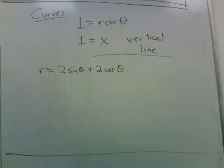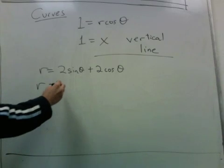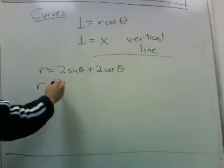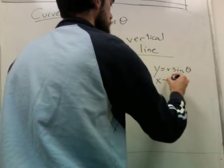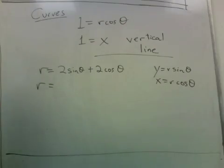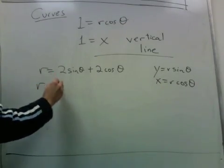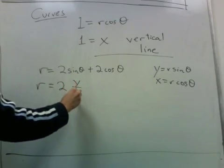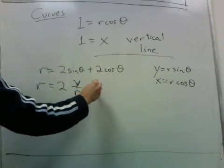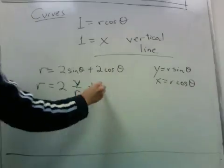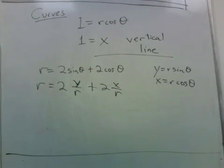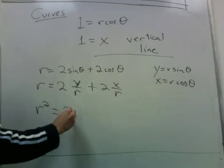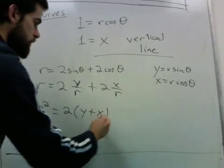Let's take a look at this equation and see what curve this represents. So r is 2 sine theta plus 2 cosine theta. I can use the fact that y is r sine theta and x is r cosine theta to write down 2 times y over r plus 2 times x over r. I can multiply both sides by r to get 2 times y plus x.